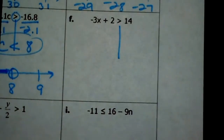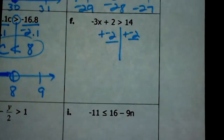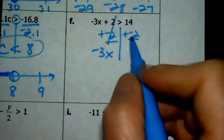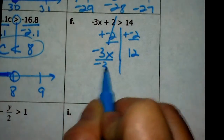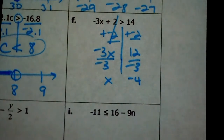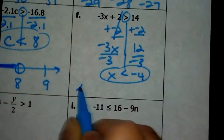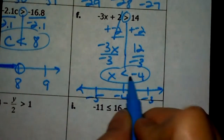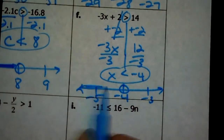Now we've got some two-step problems. Here I need to get rid of adding 2 first, so I'm going to add negative 2. I'm allowed to add a negative 2 without changing the sign — I just can't multiply or divide by a negative. Negative 3x is left over here, and 14 plus negative 2 is 12. To undo multiplying by negative 3, I divide by negative 3, so x equals negative 4. Because I just divided by a negative, instead of greater than, x is going to be less than. Negative 4 is in the center. If x is less than negative 4, that means open and shaded to the left.